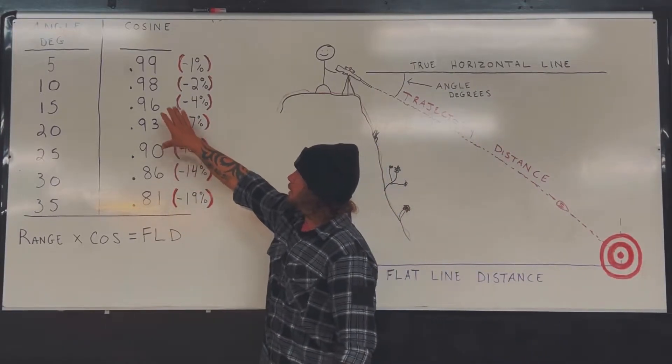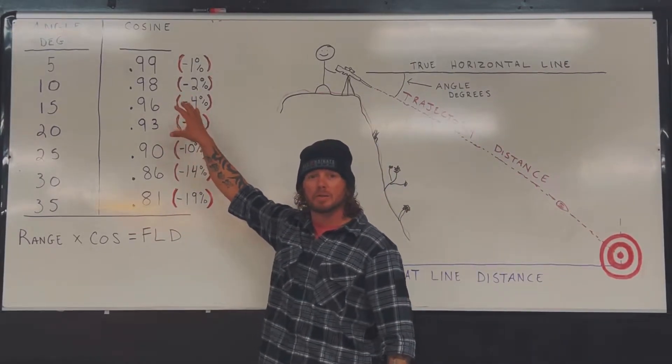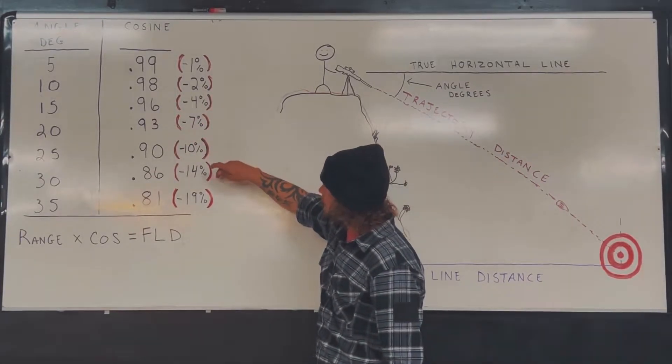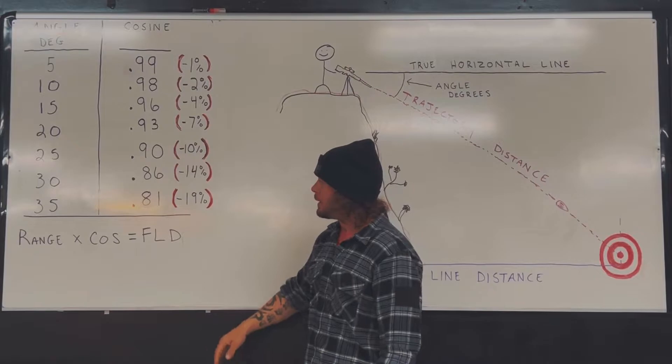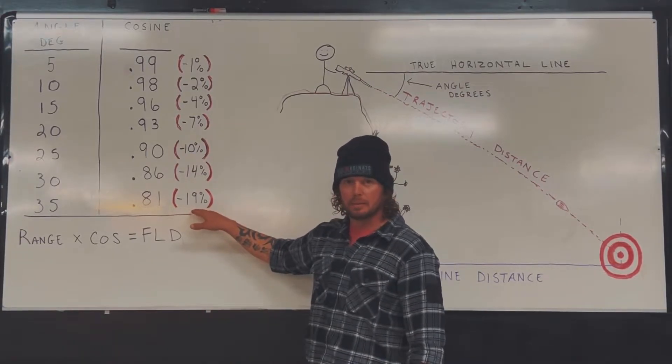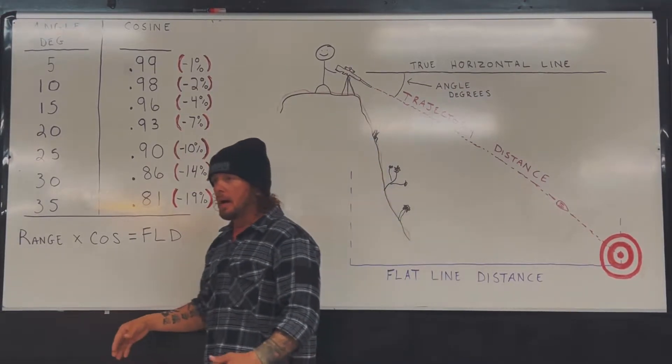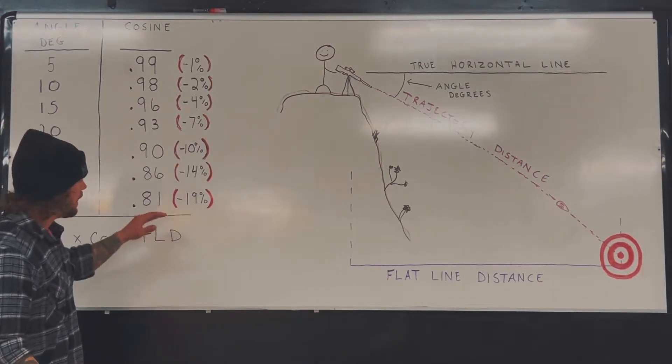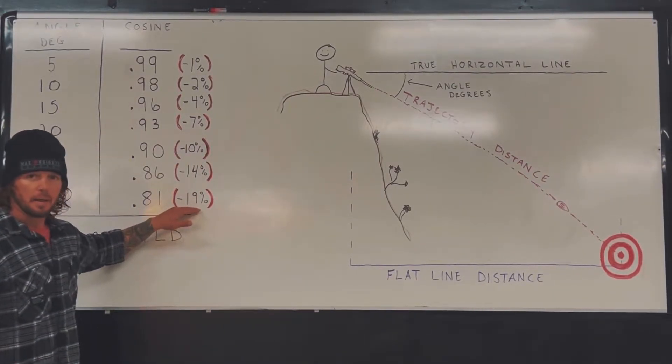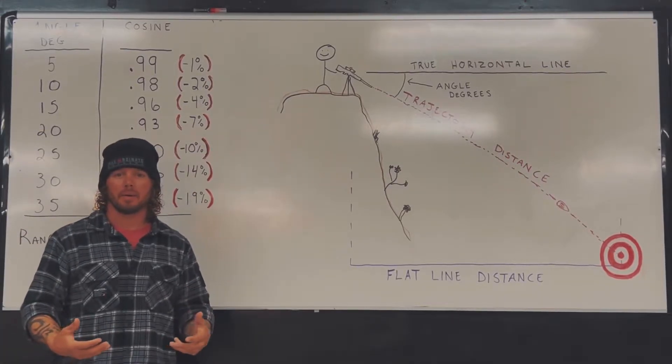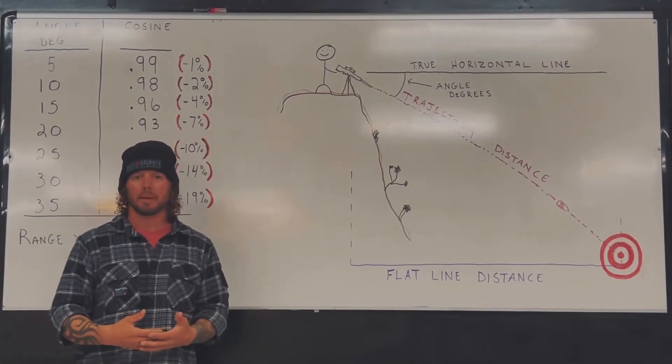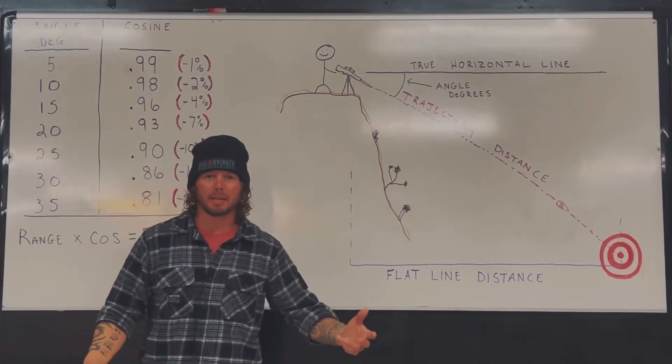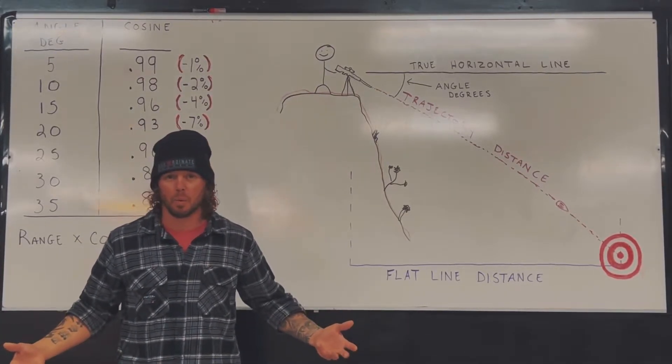So relative cosines - again, think of those as percentages: 1%, 2%, 4, 7, 10, 14, 19. Now, 19% - how precise do we need to be with this? Well, if you look at 19% and you say, what if I do 20%? Let's think about that. 400 yard shot, and instead of doing 19%, you're like, I'm going to round up to 20 because 20 is easier to calculate in my head.